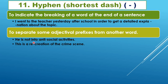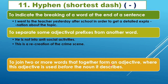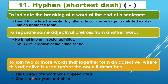Hyphen is used to join two or more words that together form an adjective before a noun. For example: 'up-to-date work' — when the adjective comes before the noun, you hyphenate it. 'His work was up to date' needs no hyphen, but 'up-to-date work' does. Similarly: 'She is a two-year-old child' — two-year-old is hyphenated because it is an adjective before the noun.